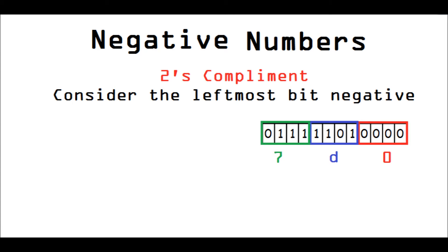You assume that seven is negative. And so, you do negative seven times 16 to the squared plus 13 times 16 to the power of one plus zero times 16 to the power of zero. And that way, you can get a negative number.